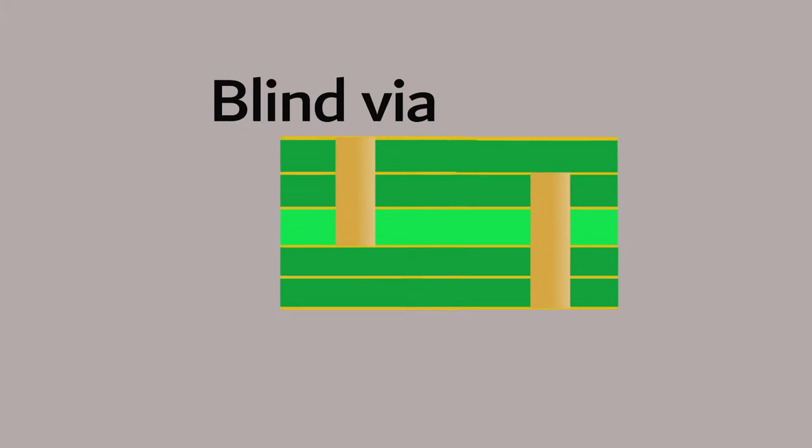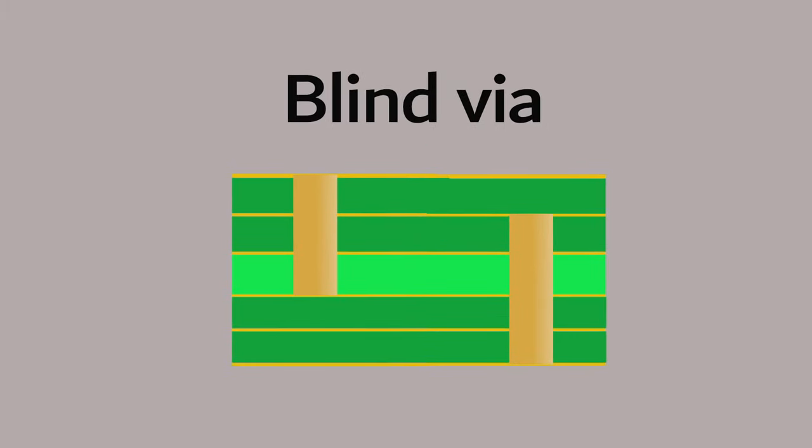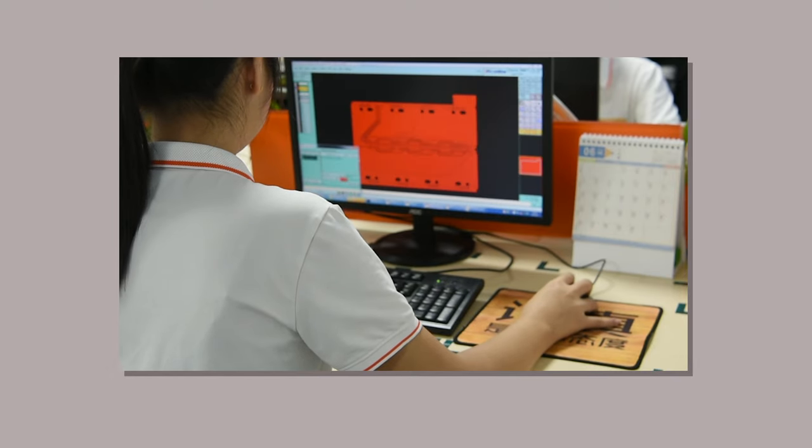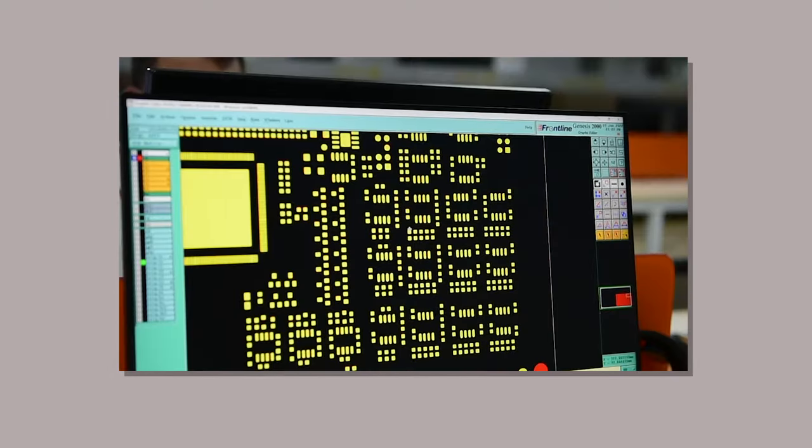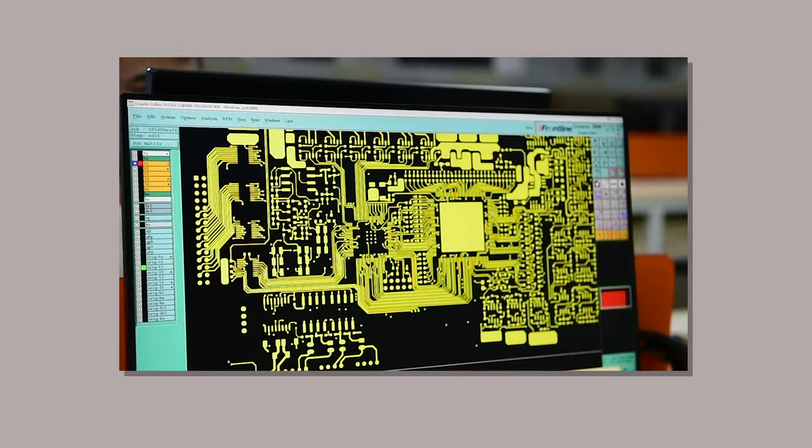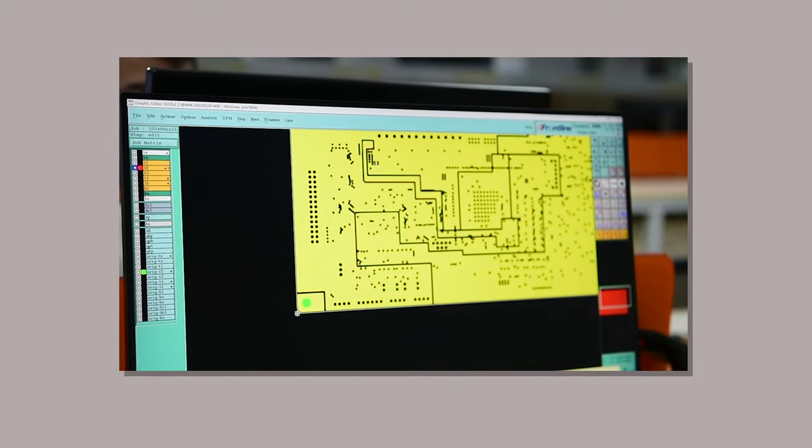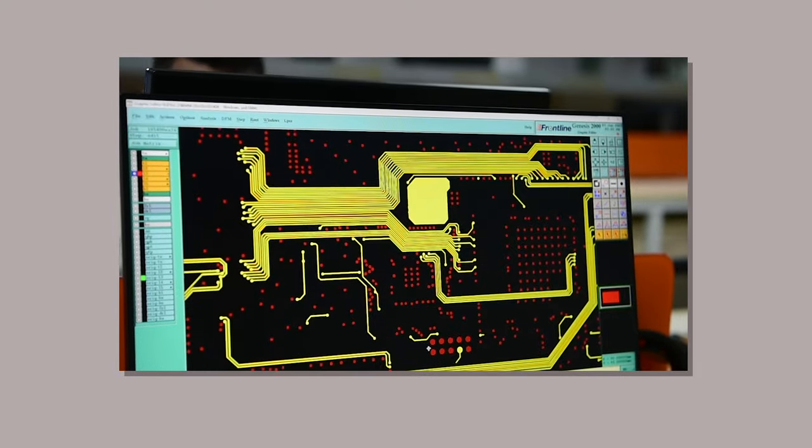A blind via extends from one side of the outer layer and connects at least one inner layer, but does not pass through the entire board. Therefore, blind vias are exposed only on one side of the board. In PCB design, blind vias can help free up some extra space and are commonly used in BGA assembling and HDI PCBs.